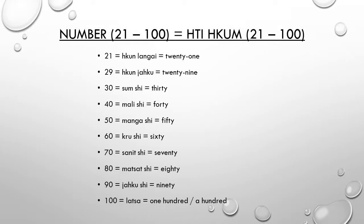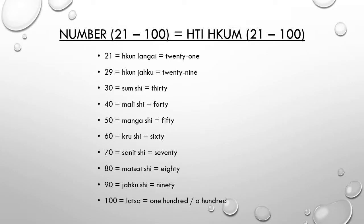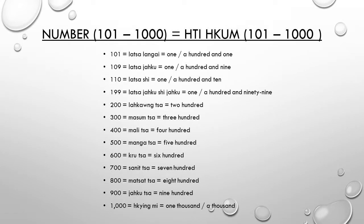We will keep counting numbers from 21 to 100. 30 is Sumshi, 40 is Malishi, 50 is Mengashi, 60 is Grushi, 70 is Snitshi, 80 is Mersatshi, 90 is Jikushi, 100 is Lasa. Happy counting!